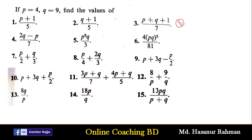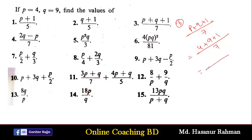Number 3 says (p+q+1)/7. Instead of p and q we put the values: p means 4, q means 9, plus 1 divided by 7. So 4 plus 9 is 13, 13 plus 1 is 14, and 14 by 7 equals 2.